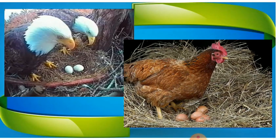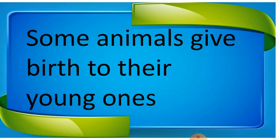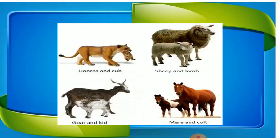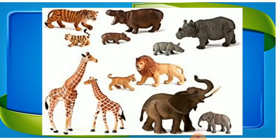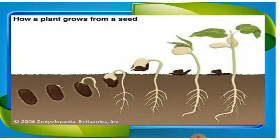A well-known example is the hen, which lays eggs — this is reproduction. Whereas some animals give birth directly to young ones: lion and cub, sheep and lamb, horse — mare and colt, goat and kid. Human beings also give direct birth to their young ones. These are examples of animals which give birth to young ones.